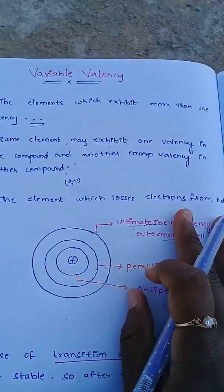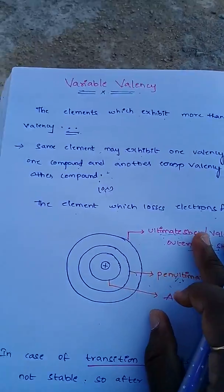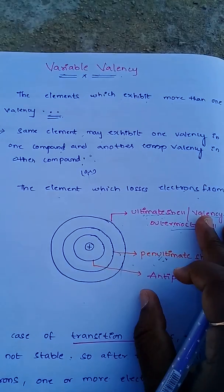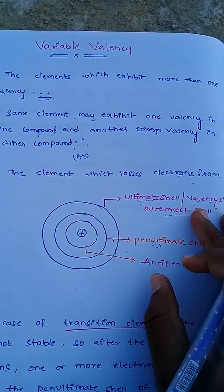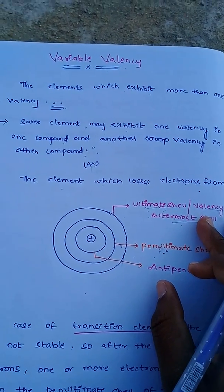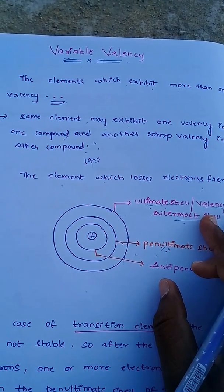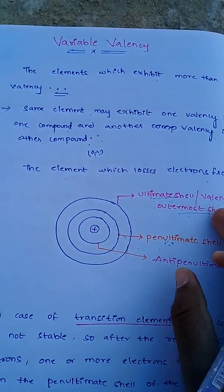So this is the explanation about variable valency. I hope you understand. Please like, share, and subscribe.